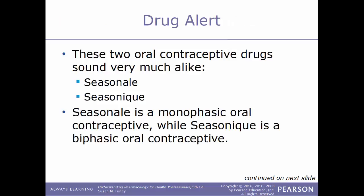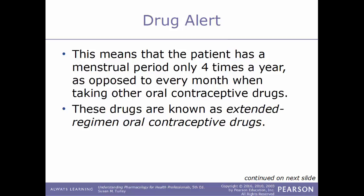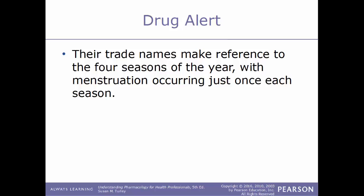Seasonale and Seasonique sound very much alike but are very different — Seasonale is a monophasic contraceptive and Seasonique is a biphasic contraceptive drug. These drugs are made by the same manufacturer and are unique in that their hormone tablets are taken continuously for three 28-day cycles (84 tablets), followed by seven inert tablets. This means the patient has a menstrual period only four times a year. These are known as extended regimen oral contraceptive drugs, and their trade names reference the four seasons of the year.